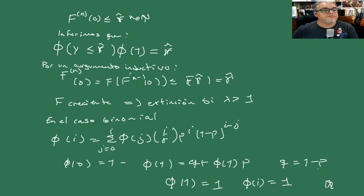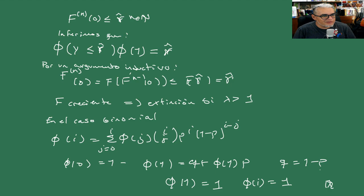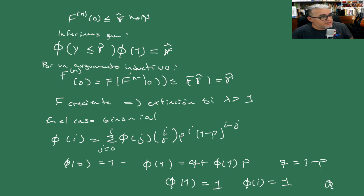Con eso terminamos este ejemplo. Lo paramos aquí, y de lo que vamos a hablar la siguiente ocasión es de clasificación de estados en cadenas de Markov, es decir, de los estados que son absorbentes, que son una especie de atractores en el sentido que le damos a las cadenas de Markov como sistemas dinámicos estocásticos. Nos vemos en la siguiente sesión.